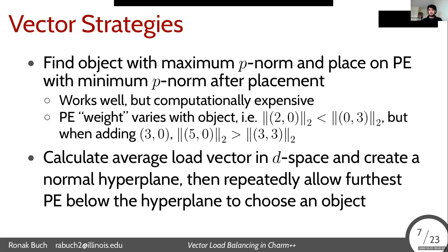There are a few ways of doing this holistically, and it's still a research problem on our end. I'll describe two solutions we've come up with so far. One is to find the object with the maximum P-norm for some P, and place it on the PE with minimum P-norm after placement. This works well because we ensure no dimension of the vector grows too big, but it can be computationally quite expensive — we have to do a lot of math with powers. Another issue is that the PE weight often varies with an object, meaning we can't necessarily use traditional greedy heuristics like a heap.